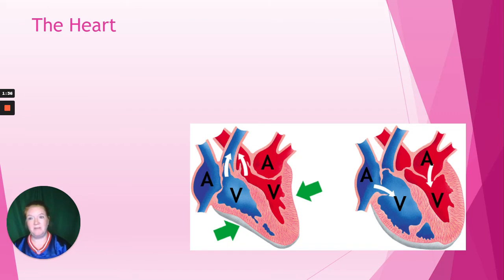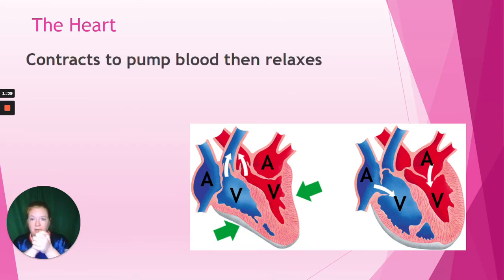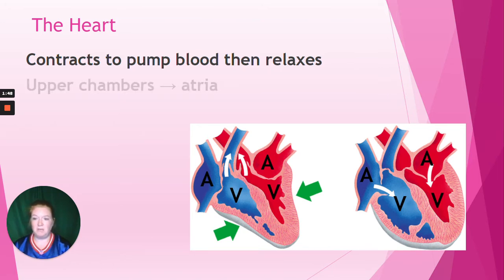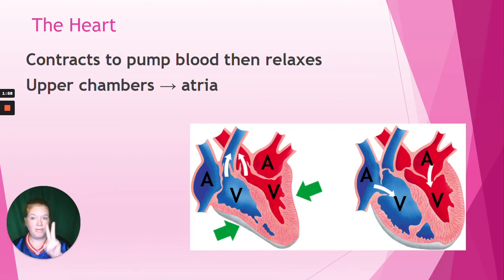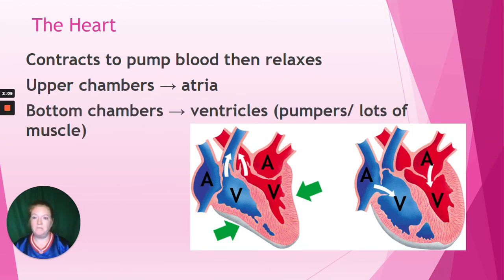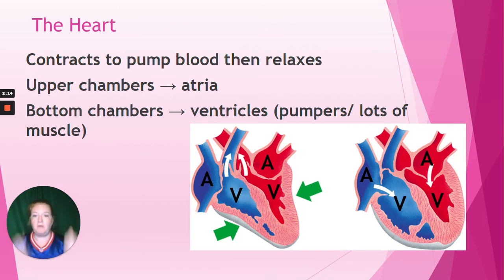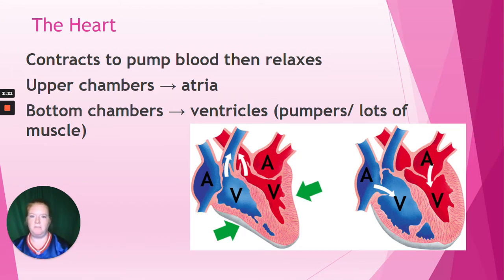The heart contracts to pump blood and then relaxes, contracts and then relaxes. When you listen to your heartbeat, you're hearing these valves close, which are directing the blood flow. We have upper chambers in the heart labeled with an A in the diagrams - they're called the atria. And then there are the bottom chambers called ventricles, labeled with a V. The ventricles are pumpers with lots of muscle. When they squeeze, they push the blood far, because they have to send blood throughout the whole body.